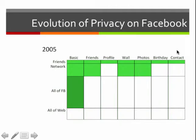And everyone on Facebook could see your basic information. Now, these are default settings we're talking about, so it's possible that you could have restricted this to be more private. But if you didn't touch your privacy settings, this is how things were by default. In 2007, we get a shift where now the network is able to access all the information about you, except your contact information, which is your street address, phone number, and email address.